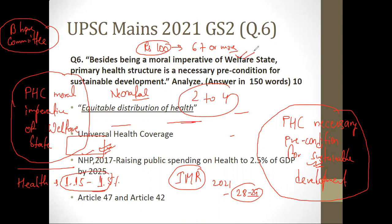To conclude: since health is a state subject, central government work alone will not suffice. You need proper coordination between central and state stakeholders, which will go a long way in strengthening primary health structure in India, thereby helping achieve the attributes of both a welfare state and sustainable development. That was it for this question; Question Number 7 will be covered in the next part.